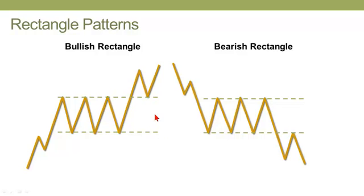And there's the idea in technical analysis of the polarity principle, which says that this line here, which is resistance in the bullish rectangle, once there's a breakout, it becomes support. So the former resistance line becomes a new support line. And similarly, in the bearish rectangle here, this local support line after the breakout becomes a new resistance line.